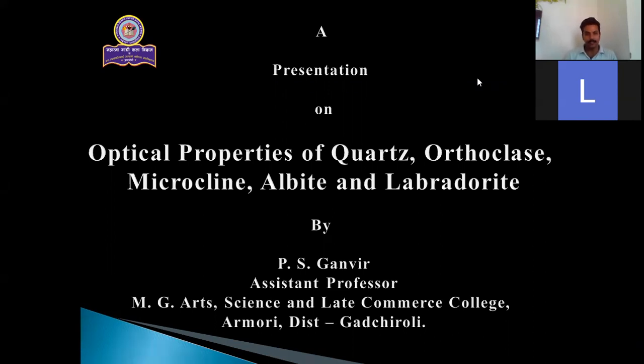Today we are going to discuss about quartz, orthoclase, microcline, albite and labradorite. Quartz is pure silica whose composition is SiO2, whereas orthoclase, microcline, albite and labradorite are members of feldspar group where orthoclase and microcline are alkali feldspar, while albite and labradorite belong to plagioclase feldspar. We have already studied the physical properties of these minerals in our last semester. So let us discuss the optical properties of individual minerals.